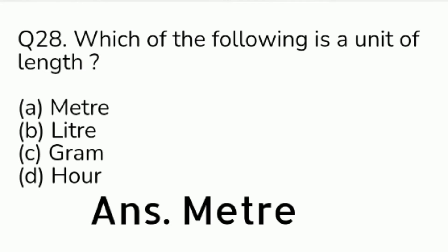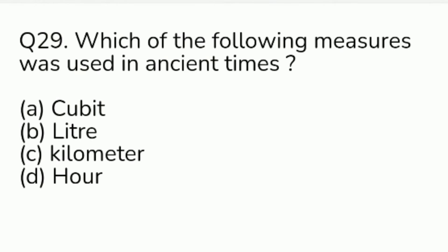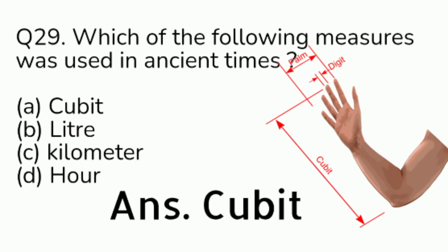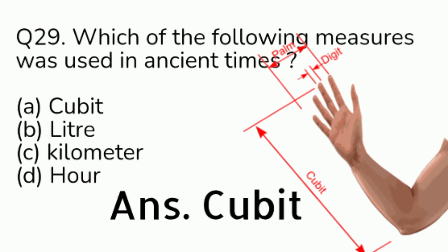Question number 29. Which of the following measures was used in ancient times? Option A: cubit. Option B: liter. Option C: kilometer. Option D: hour. Answer is Option A, cubit.